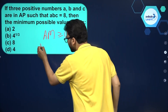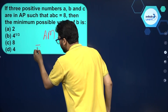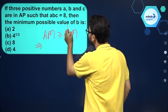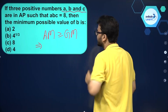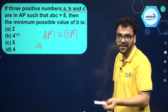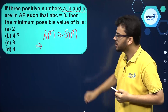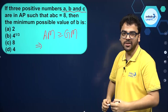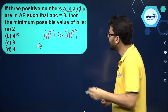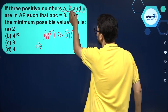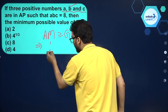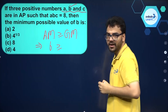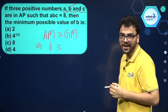Now, what will be the arithmetic mean of these three numbers? Since they are in arithmetic progression, their arithmetic mean will be the middlemost value, which is B. So B is greater than or equal to their geometric mean.